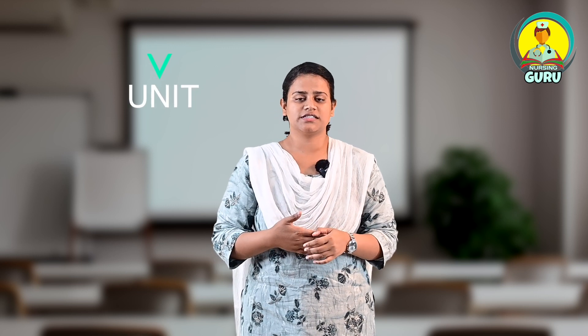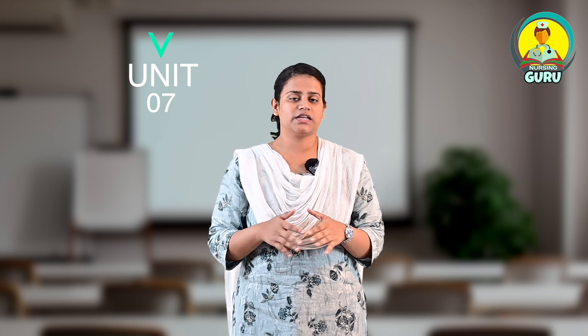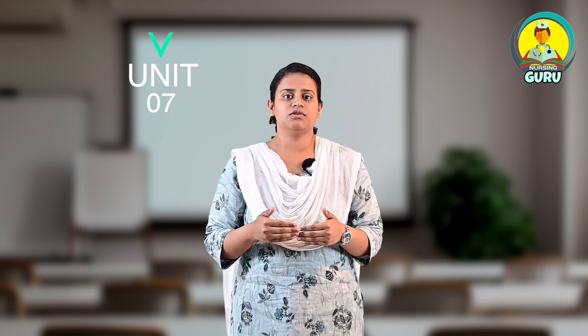Unit 7 is population and its control, which is very common, easy to learn, and very important to community health nursing. It focuses on population explosion, methods to control population, and family planning — including methods of contraception (temporary and permanent) and emergency termination of pregnancy.